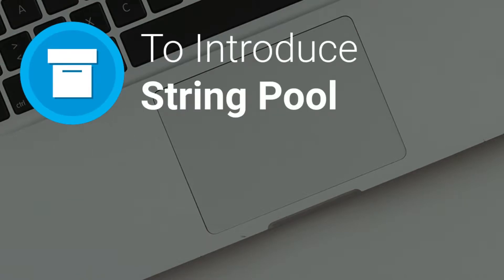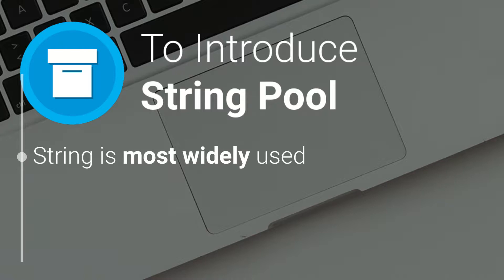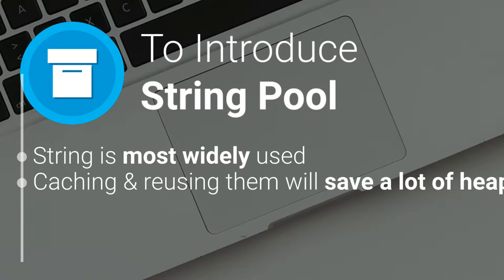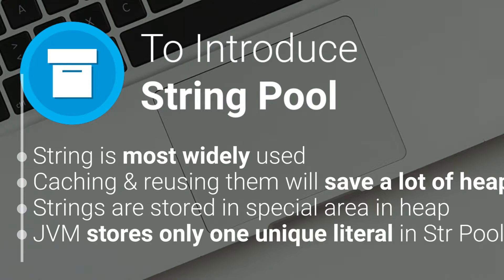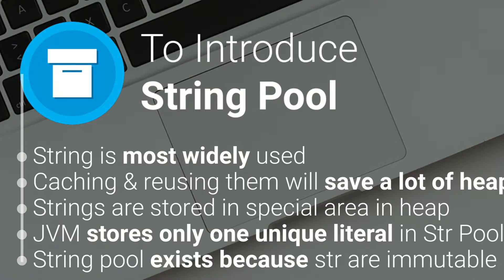First, to introduce the string pool. Since the string is the most widely used data structure, caching the string literals and reusing them will save a lot of heap space, because different string variables can refer to the same object in the string pool. That's why Java introduces a special memory region called the string pool where strings are stored by the JVM. Since strings are immutable in Java, the JVM optimizes the amount of memory allocated for them by storing only one copy of each literal string in the pool. This process is called interning. That's why, in order for a string pool to exist, the string must be immutable.